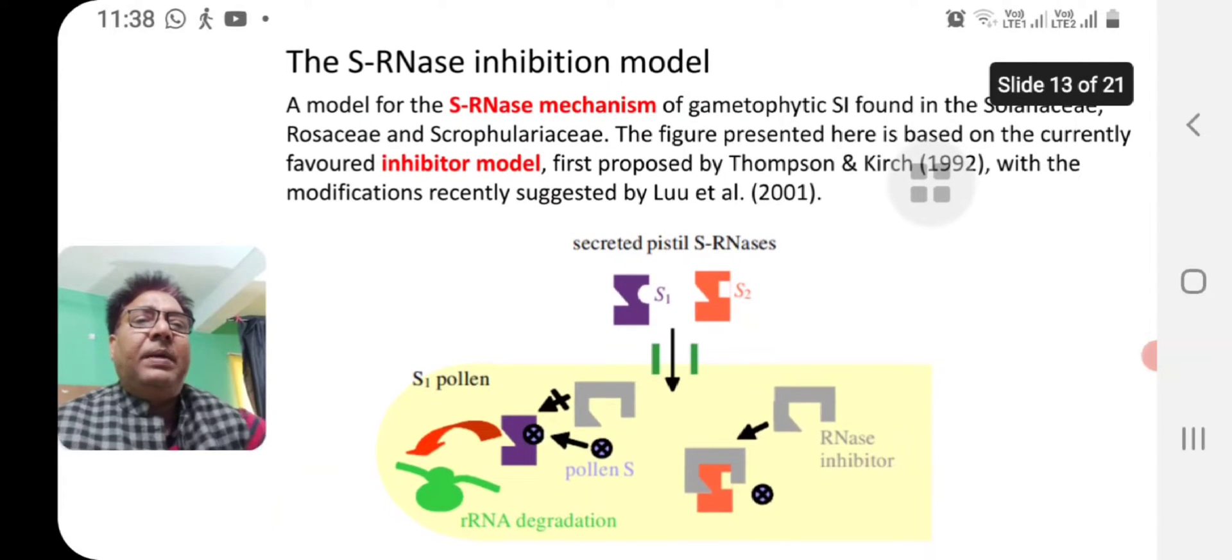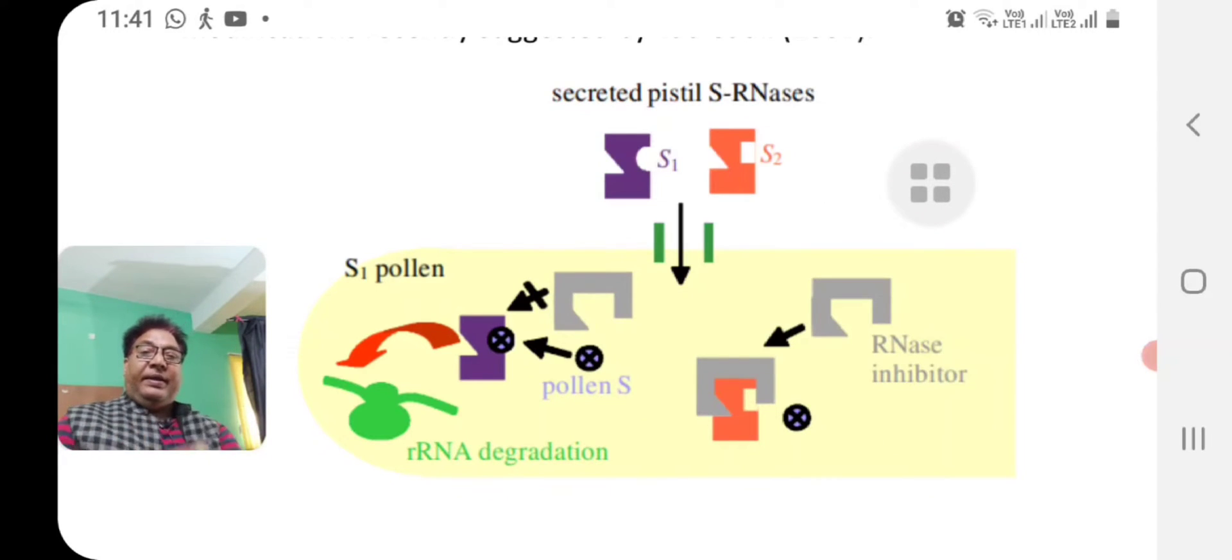This is the inhibition model proposed by Thomson and Kerch 1992. Here is a diagram of a pollen tube and you can see outside the pollen tube there are two sRNAs, S1 and S2, produced from two different alleles. If the pollen tube is from S1 and S2 pollen, then rejection will occur. If it is from S3, then pollen tube formation will continue. Both the sRNAs enter into the pollen tube, that is not allele dependent.